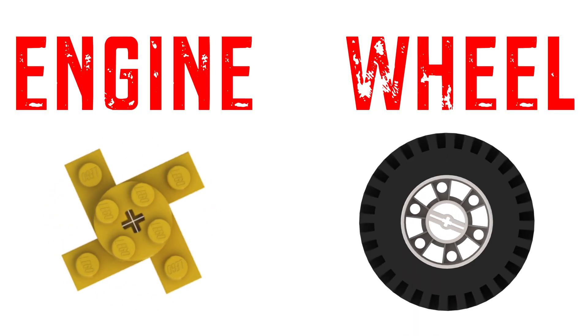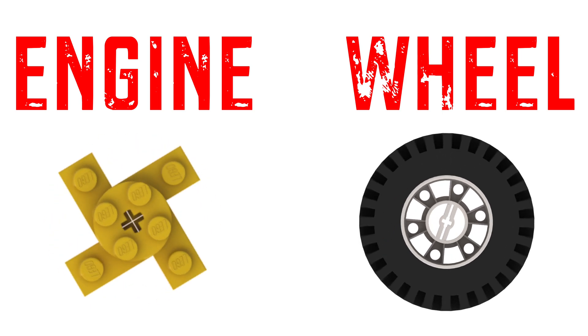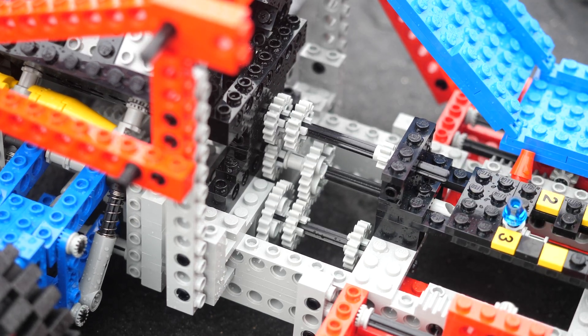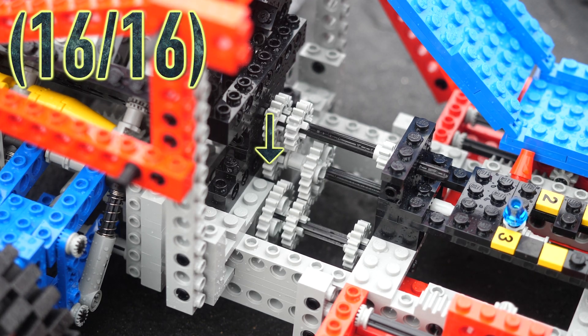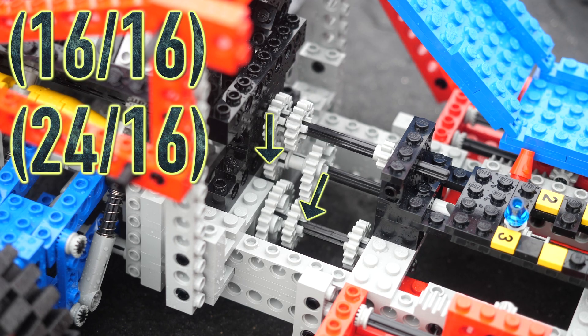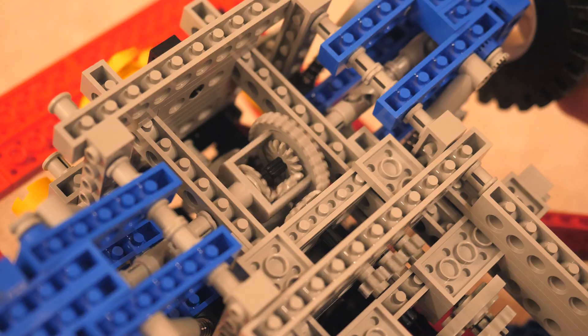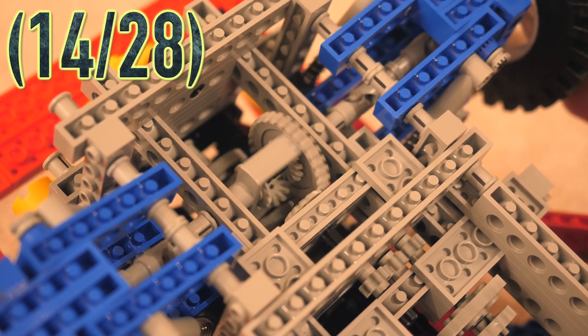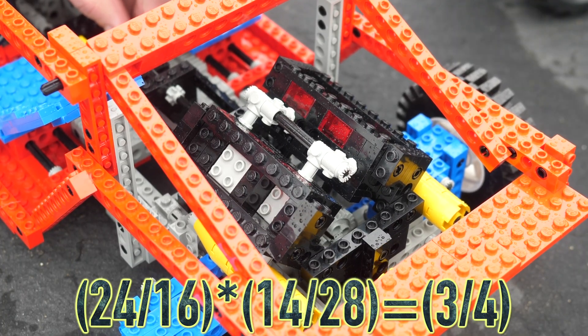So, for every full rotation of the engine, the wheels turn 120 degrees. In the third speed, we first get a ratio of 1 to 1, because the motion simply travels through a pair of 16-tooth gears. Then, we get a ratio of 24 to 16, and we multiply that by 14 over 28, which gives us our final result of 3 over 4.